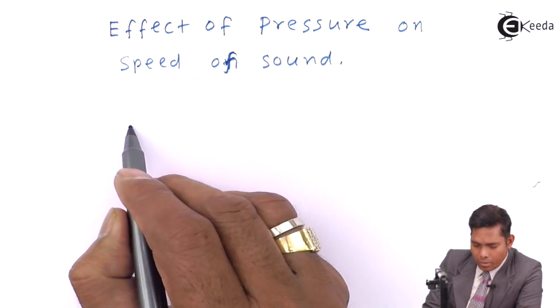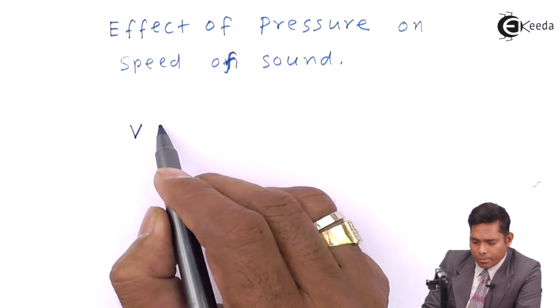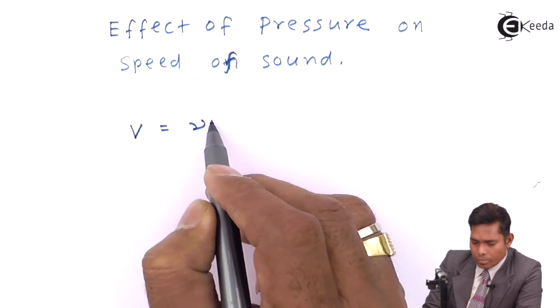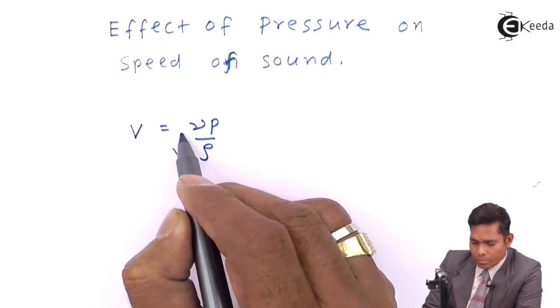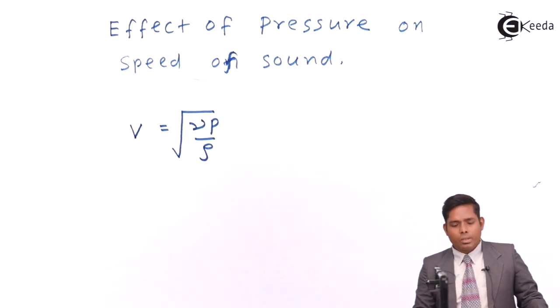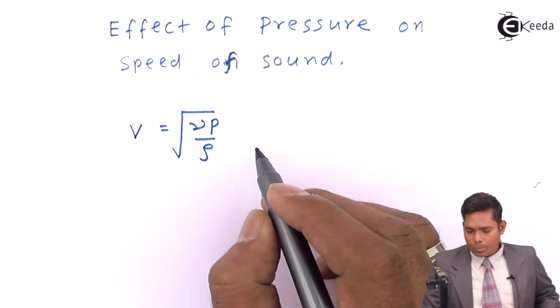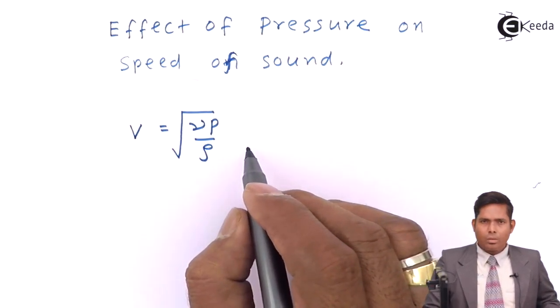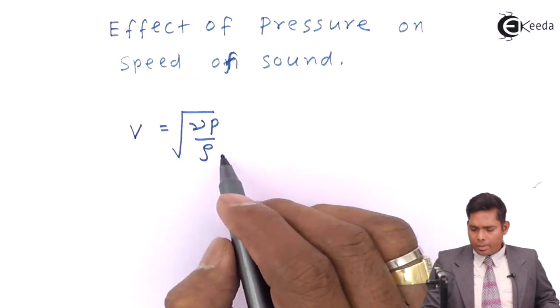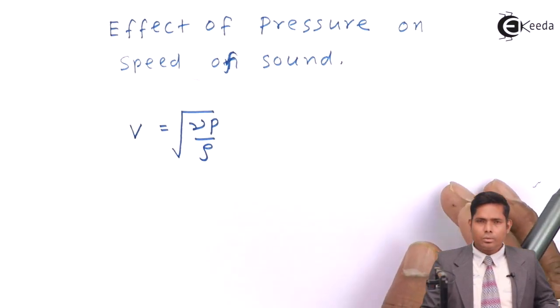Now, the equation for speed of sound in air is V equals gamma P by rho. This is what we have already found, and it is found to be 332.